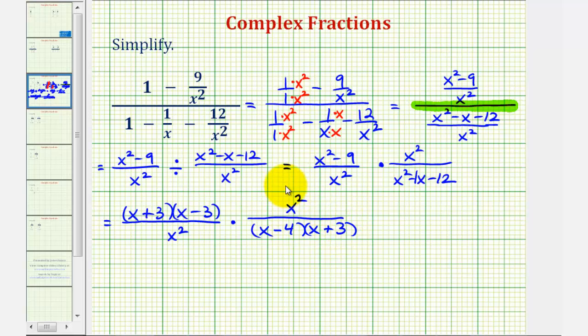Now, we can simplify. X squared over x squared simplifies to one, and so does the quantity x plus three over the quantity x plus three. So the complex fraction simplifies to the quantity x minus three divided by the quantity x minus four. This would be the simplified complex fraction. I hope you found this helpful.